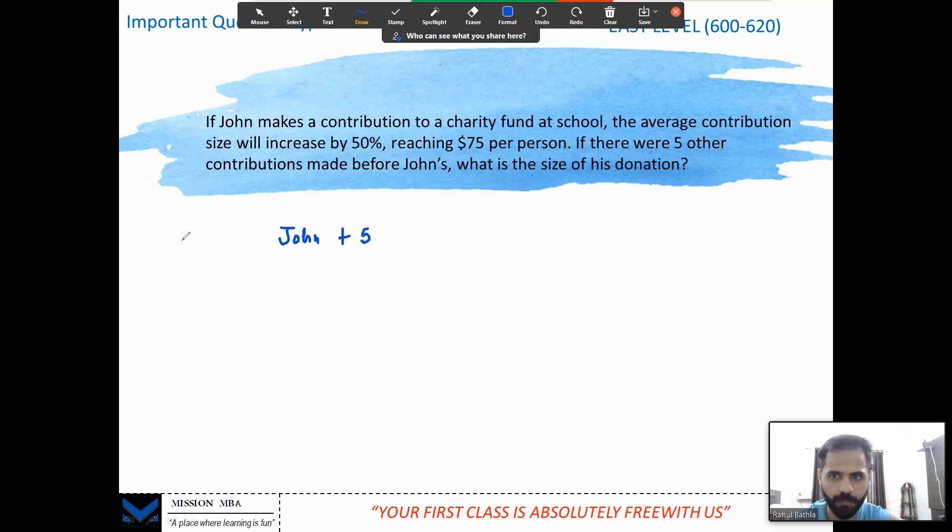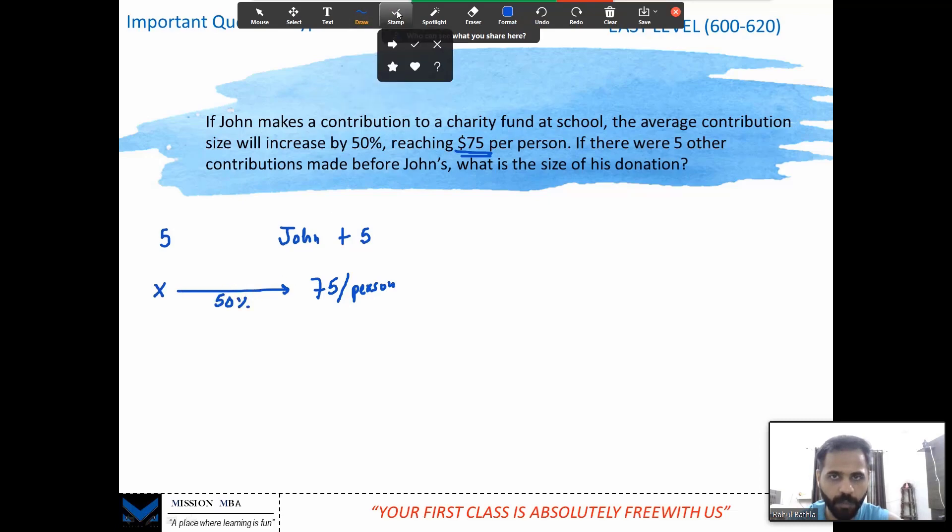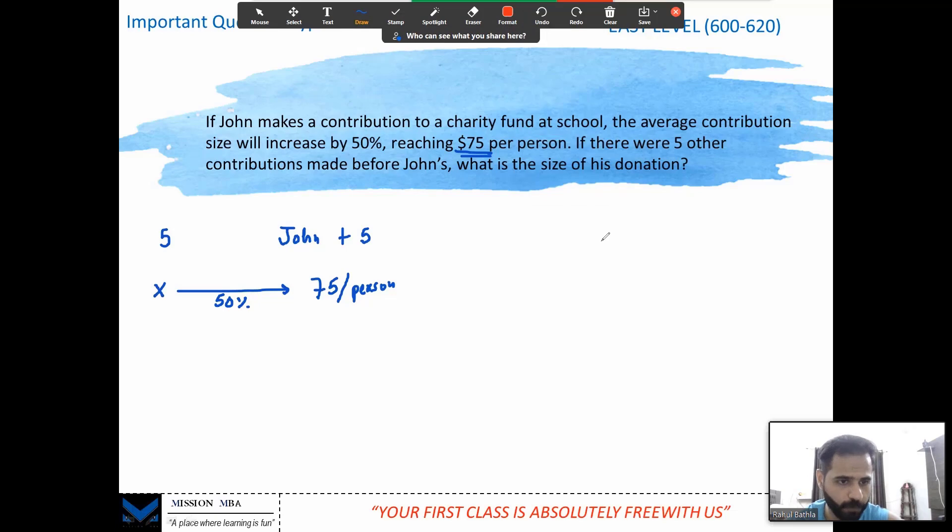Plus five other people. And here I have five people right now. I do not know the average contribution, but I know that when John and five other people combine, the average contribution is 75 dollars. Now this is 75 per person. And I also know that it has increased by 50%, and then you have reached over here. Now comes a very beautiful concept of percentage multiplying factor. If a number is increased by 50%, I can write it down as 1.5x. So I know 1.5x is equal to 75.